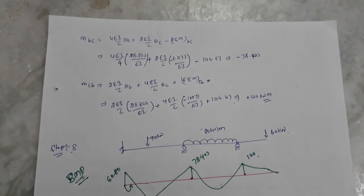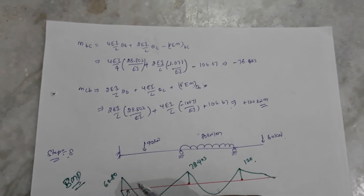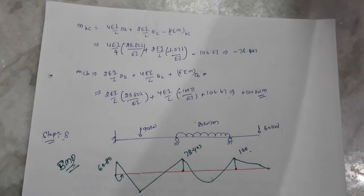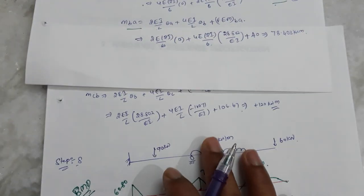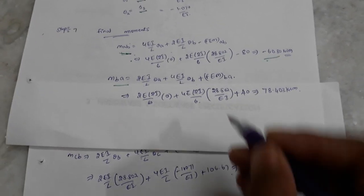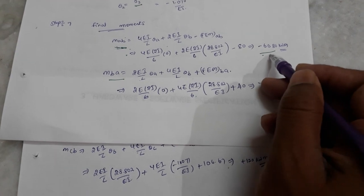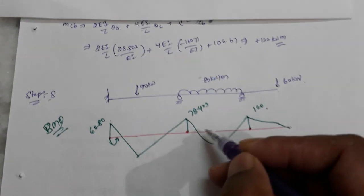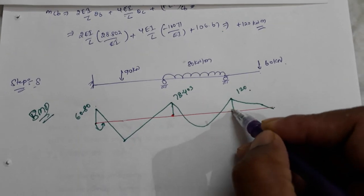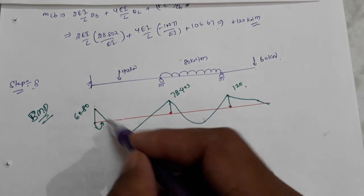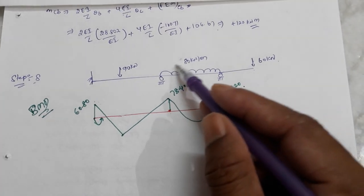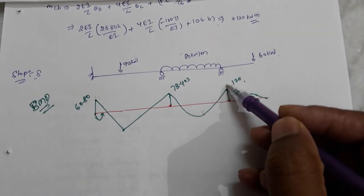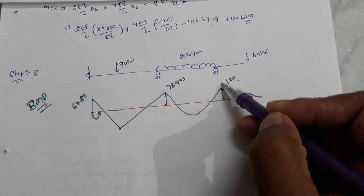From the computed moments, we draw the bending moment diagram. MAB is minus 60.80, where the negative sign indicates anti-clockwise rotation. We mark the moments at each joint, then superimpose the effect of the point load and the uniformly distributed load to obtain triangular and parabolic curves on the BMD, with zero values at the appropriate locations.